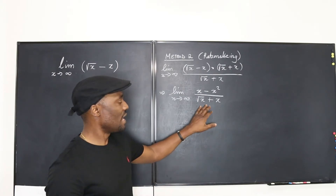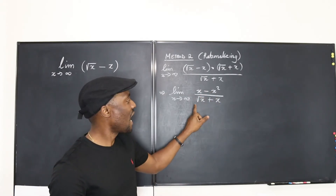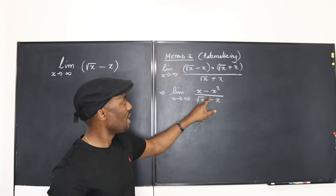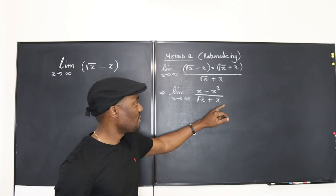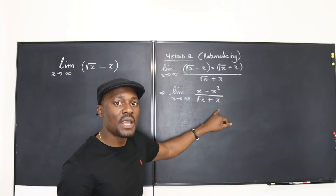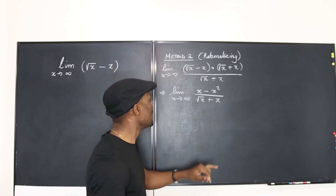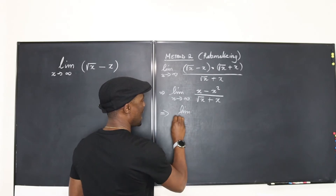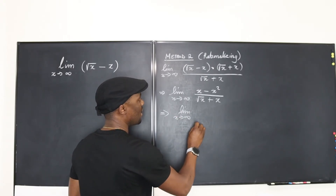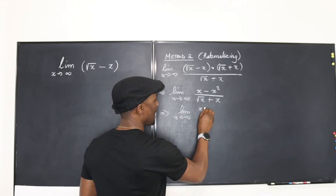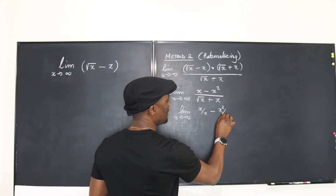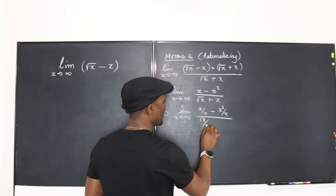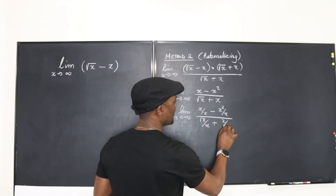Since we still have subtraction in the numerator, it's hard to deal with directly. So look at the denominator and ask yourself which term has the highest power. That is x to the power of one, so I'm going to divide the top and bottom by x. The next line becomes: the limit as x goes to infinity of x over x minus x squared over x, all over square root of x divided by x plus x divided by x.